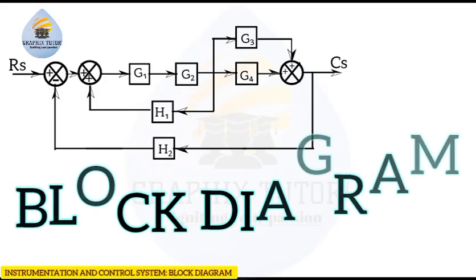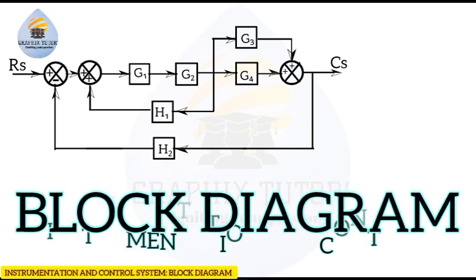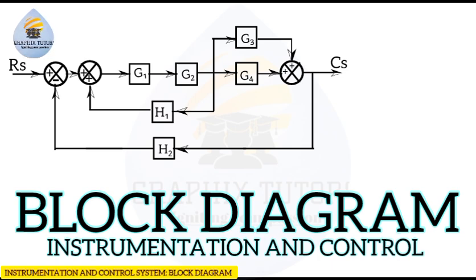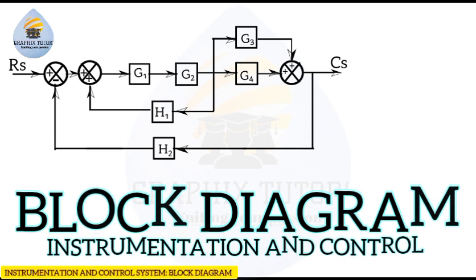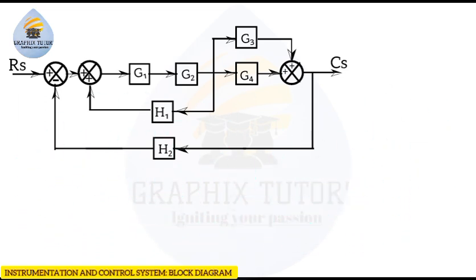Hello everyone, my name is Graphics. If you look at the front of the screen, you see a diagram which is a control system. This control system has an input signal rx and also has an output signal cs. The control system has three summing points, also called error detectors, and it has six blocks: g1, g2, g3, g4, h1, and h2.